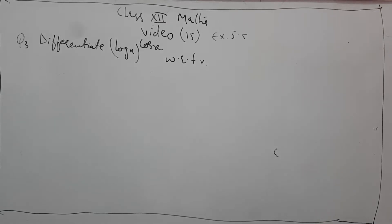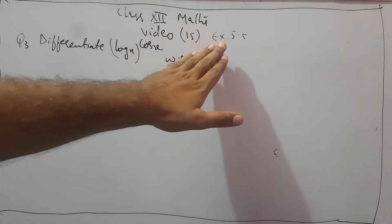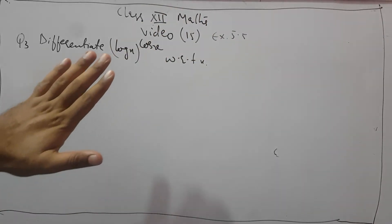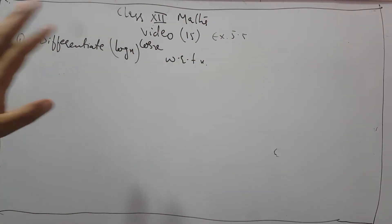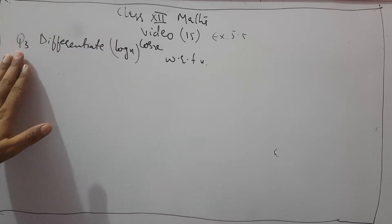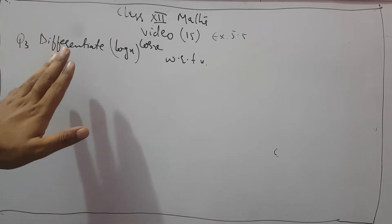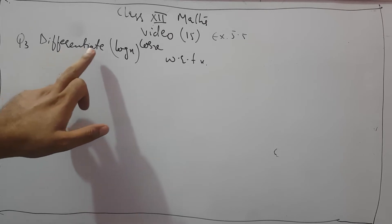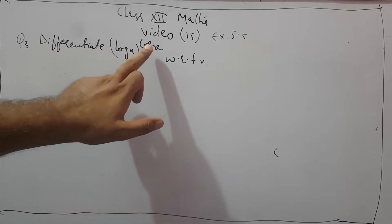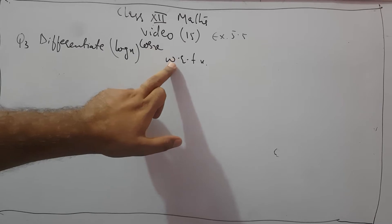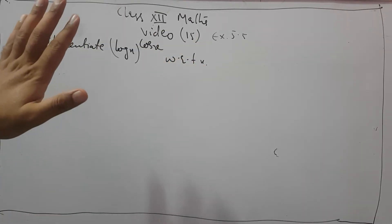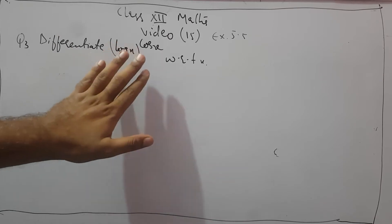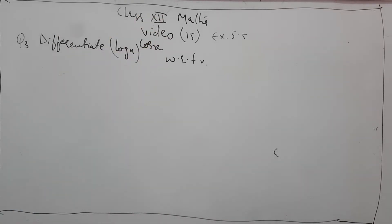This is video number 15, exercise 5.5. In the 14th video we did question number 2; this is question number 3. Let me read this question for you: differentiate log x raised to power cos x with respect to x. So we have been given this function and we have to differentiate it with respect to x. Without wasting time, let me come to the solution.